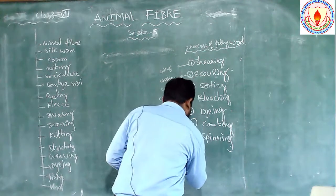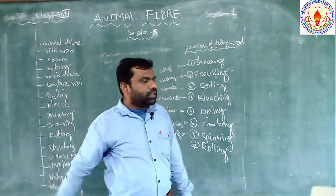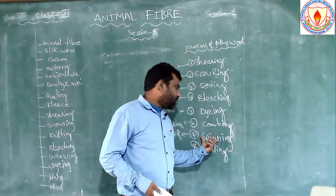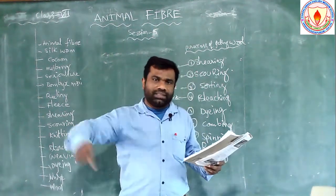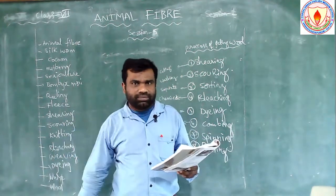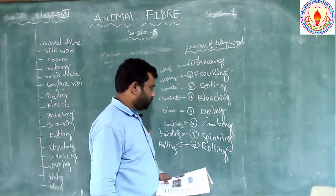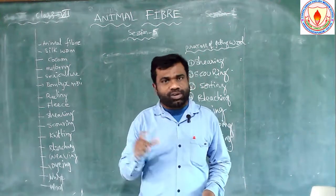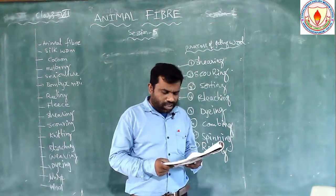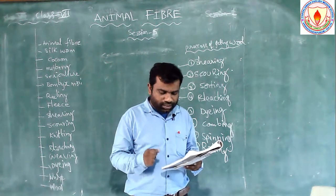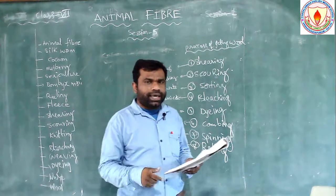The eighth process is rolling. After spinning the threads — twisting them — they are rolled up. There is a rolling process. You may have seen yarns at home, like Dara Priyalu. Spinning and twisting are the same, and then rolling follows.